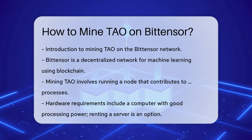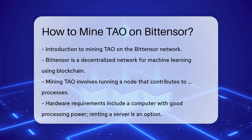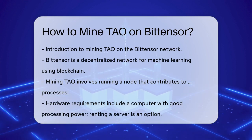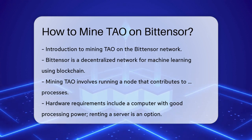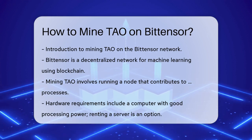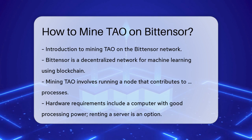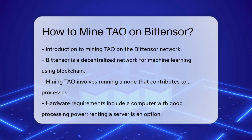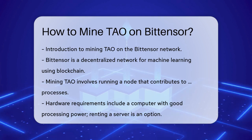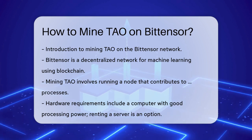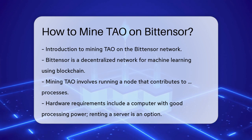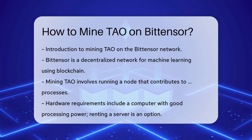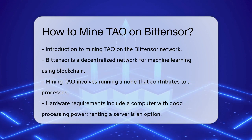First, you need to understand what Bittensor is. It's a decentralized network that focuses on building and deploying machine learning models using blockchain technology. To mine Tau, you'll be contributing to this network by running a node that participates in AI processes.